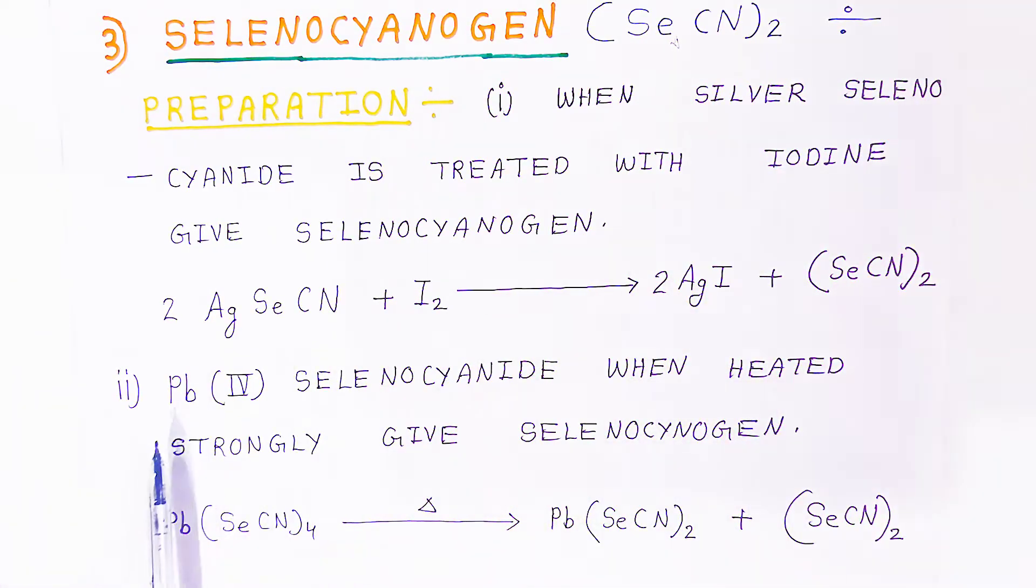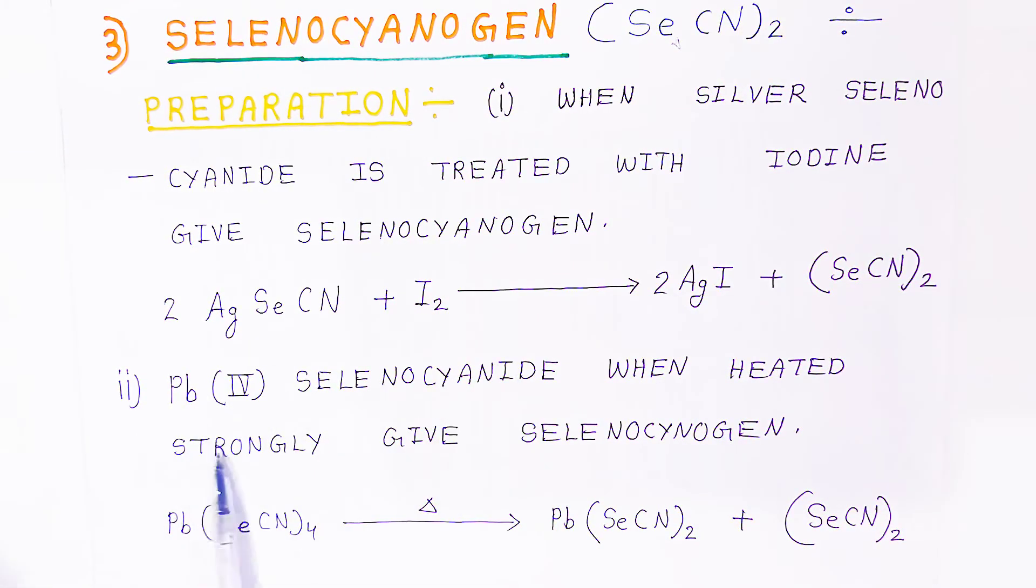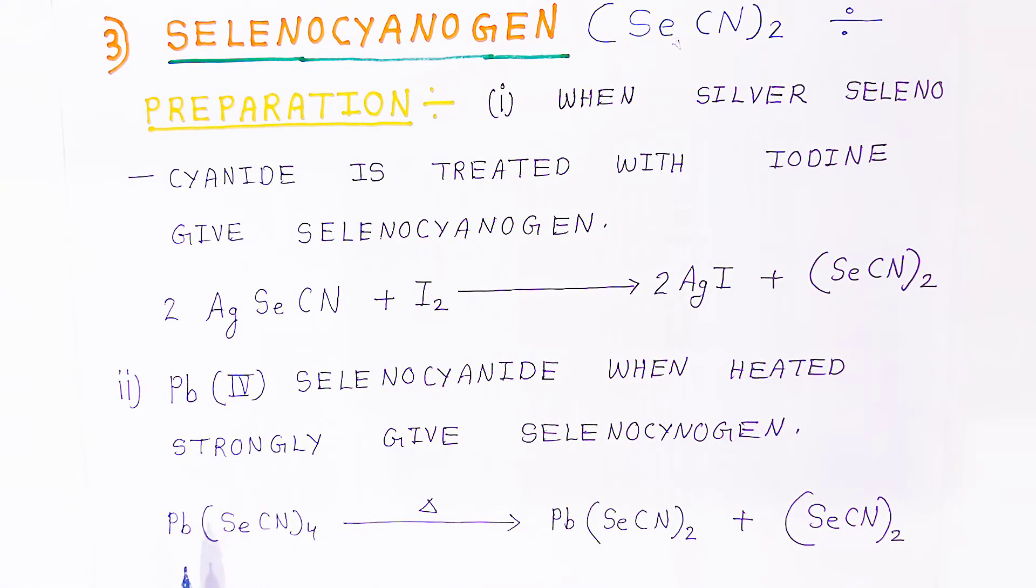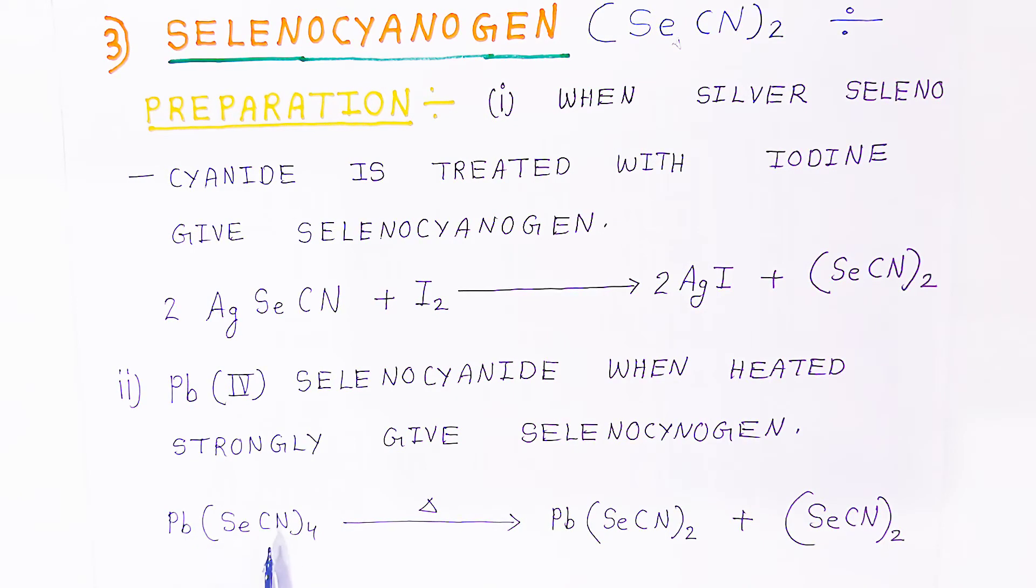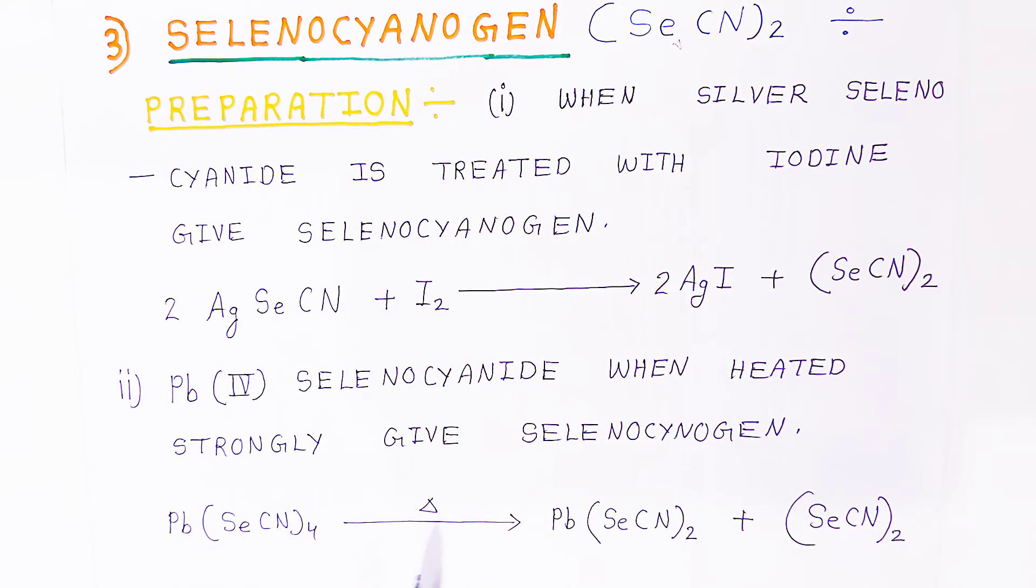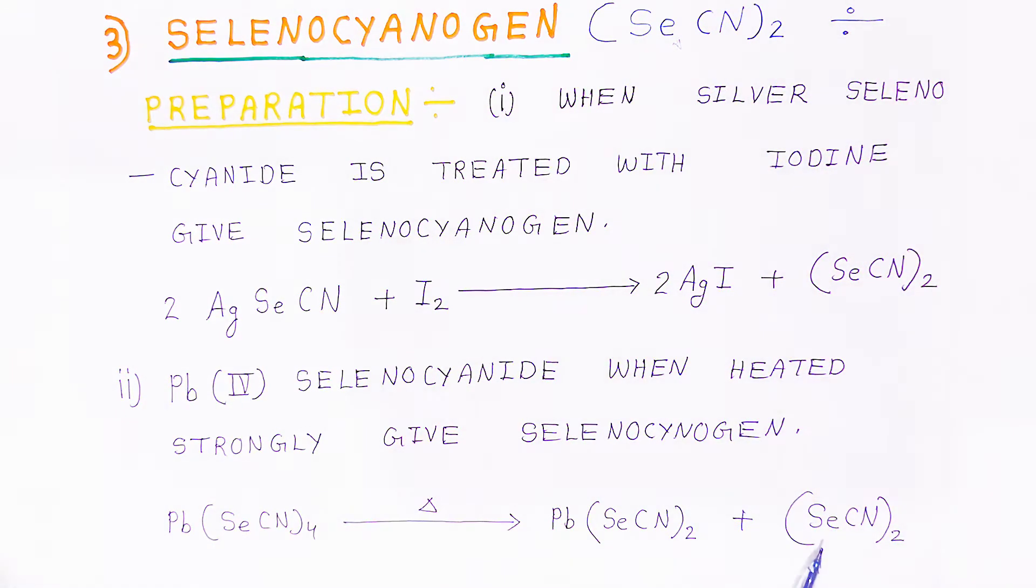Second preparation: lead(IV) selenocyanide, when heated strongly, gives selenocyanogen. If you have lead(IV) selenocyanide tetraselenocyanide, when you heat strongly, you are getting lead selenocyanide dicyanide and selenocyanogen. This is the second preparation.